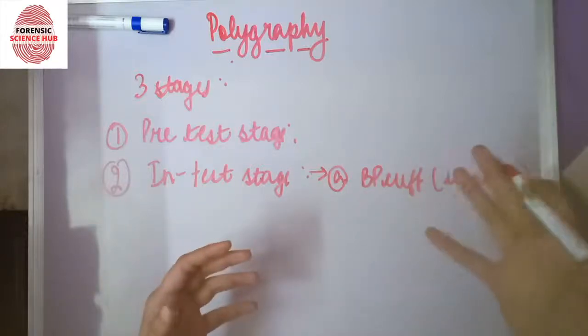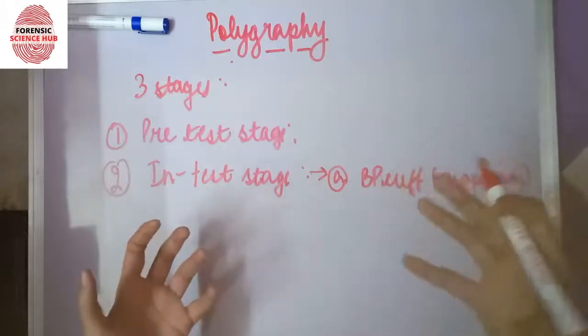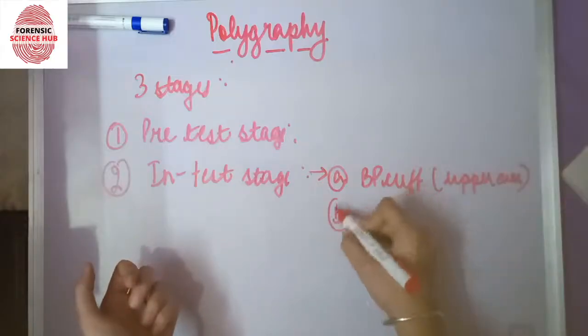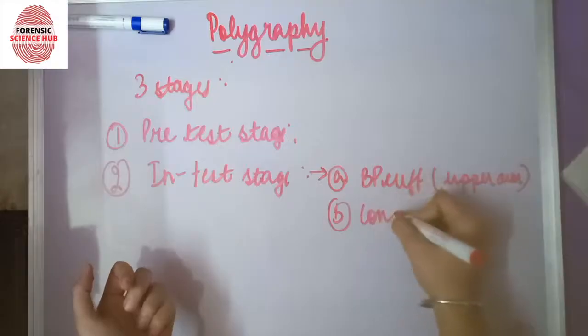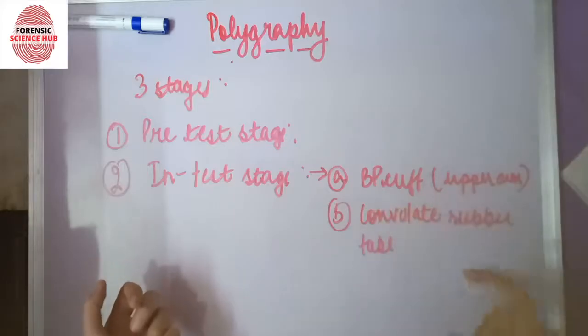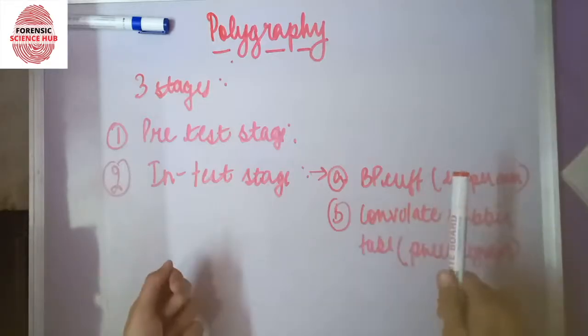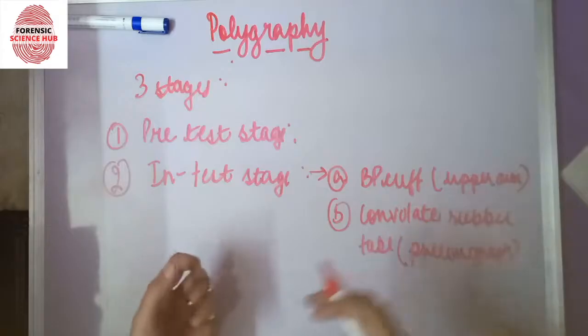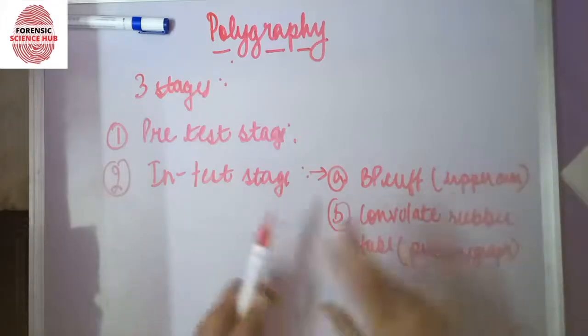Another component is a convoluted rubber tube, also known as a pneumograph. These are placed around the examinee's chest and abdominal areas to monitor respiratory activity.